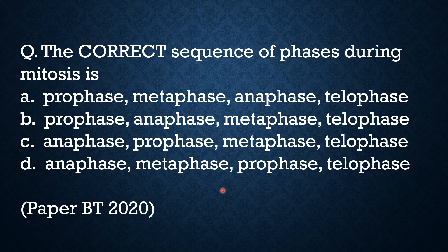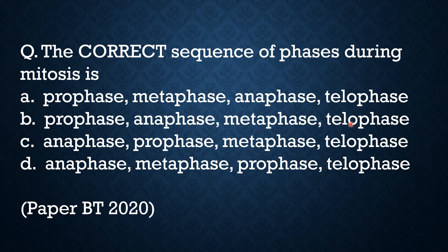Now this is a question for my next video. The question is from the biotechnology paper of 2020. The question is from cell biology — cell division is the topic. The correct sequence of phases during mitosis is: options are (A) prophase, metaphase, anaphase, telophase; (B) prophase, anaphase, metaphase, telophase; (C) anaphase, prophase, metaphase, telophase; and (D) anaphase, metaphase, prophase, telophase. Four options are given, this is an MCQ type question, and one of the options is correct — so you find the correct answer for this question.